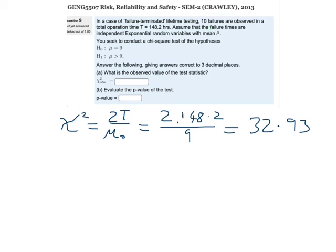If it had been time terminated, we would have needed 2(r+1) in order to get the correct degrees of freedom. But we need 20 degrees of freedom, which is 2r. So, we had 10 failures, 20 degrees of freedom.